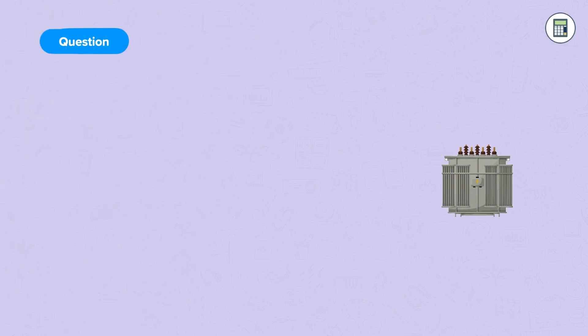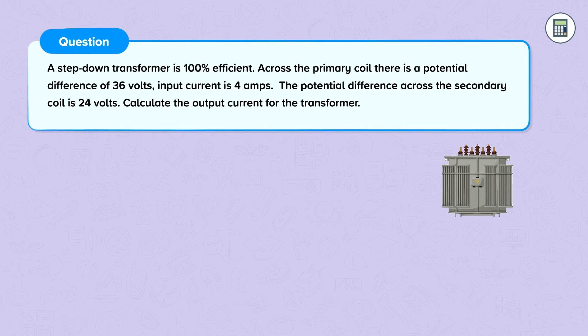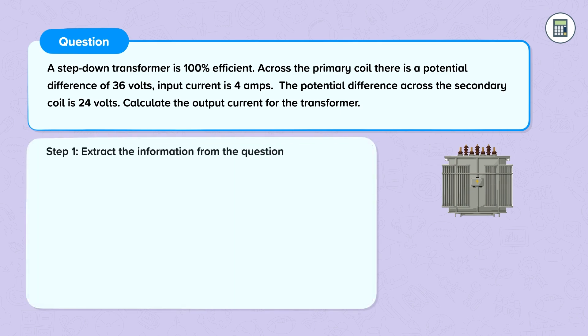Let's have a look at a question. A step-down transformer is 100% efficient. Across the primary coil there is a potential difference of 36 volts. Input current is 4 amps. Potential difference across the secondary coil is 24 volts. Calculate the output current for the transformer. Step 1: we extract the information from the question. Potential difference across the primary coil is 36 volts and the current is 4 amps. Potential difference across the secondary coil is 24 volts.